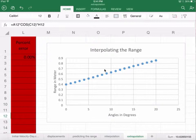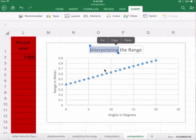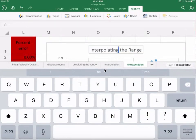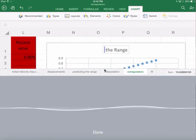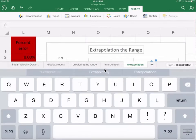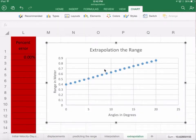Now with extrapolation we can go beyond the numbers that we have. We can go below 0 degrees, we can go greater than 20 degrees. Let's go ahead and change the title here to extrapolation. We have extrapolation up there, still going to be angles in degrees and range in meters.